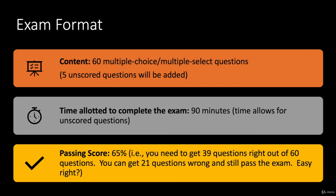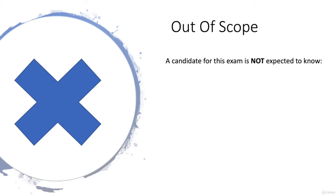The time allotted to this exam is 90 minutes, with an additional 15 minutes for the five unscored questions. The passing score is 65 percent. Out of 60 questions, you need to get 39 right, which means you can get 21 questions wrong and still pass the exam.